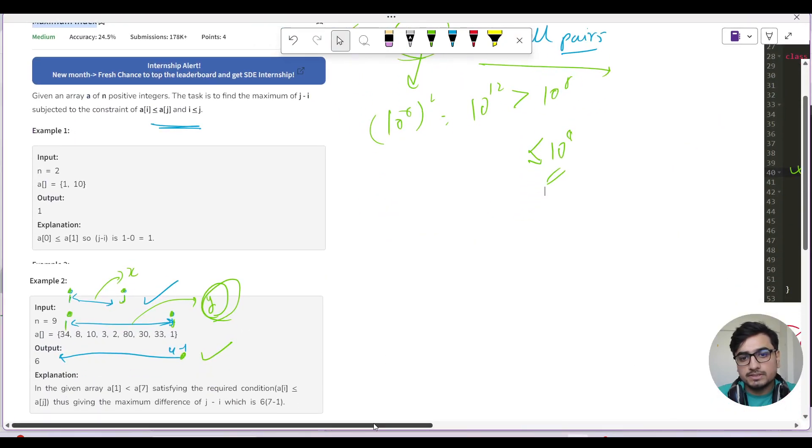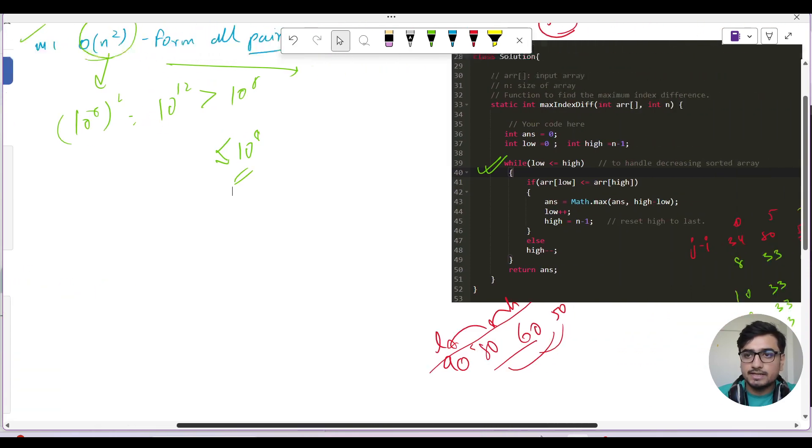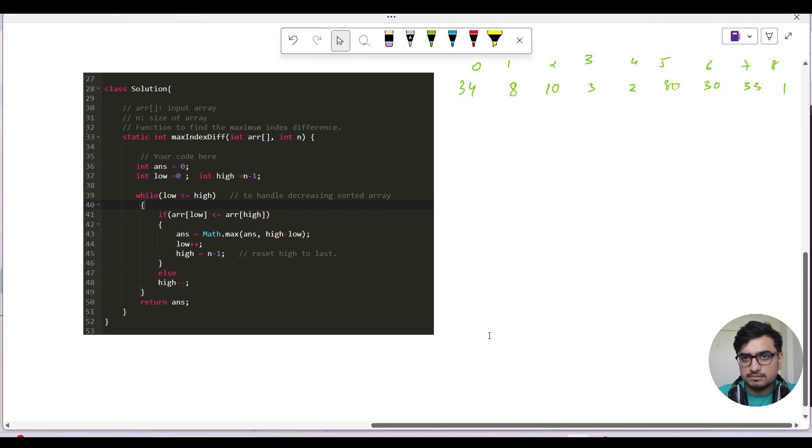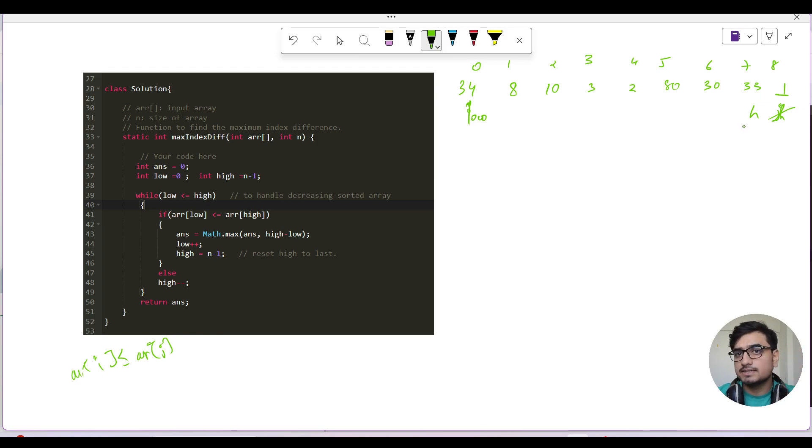How do we go from brute force to optimization? We try to eliminate recurring tasks. The intuition is that we want to take maximum difference and we have the condition that array[i] should be less than or equal to array[j]. We will keep checking if array[i] is greater than array[low]. 33 is not greater than 34, so we move back. 33 is not greater than 30, we move back. Then 34 and 80 is possible.